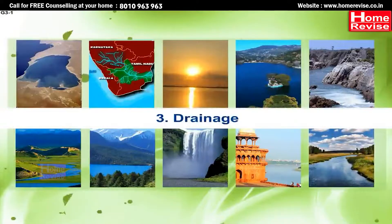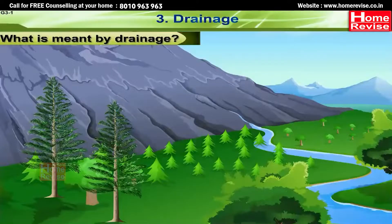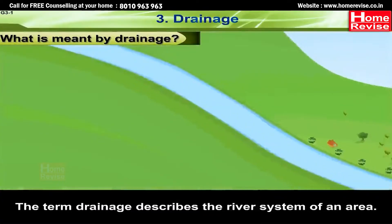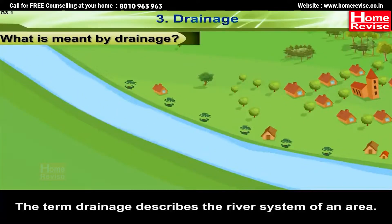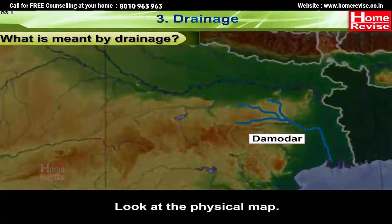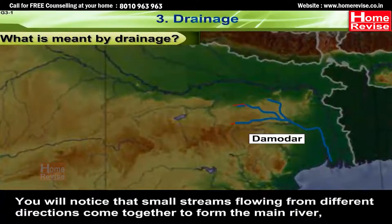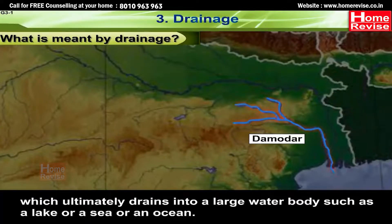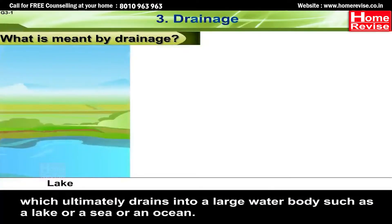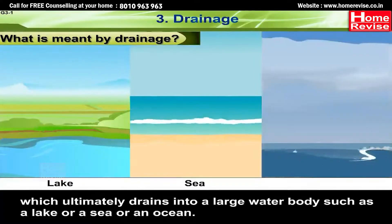Chapter 3: What is meant by drainage? The term drainage describes the river system of an area. Looking at the physical map, you will notice that small streams flowing from different directions come together to form the main river, which ultimately drains into a large water body such as a lake, sea, or ocean.